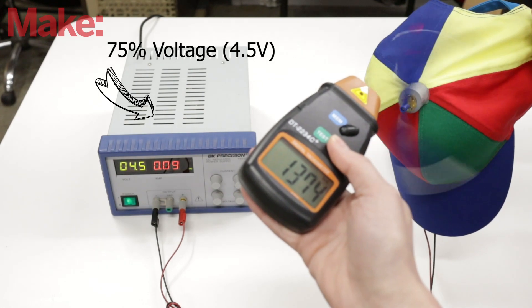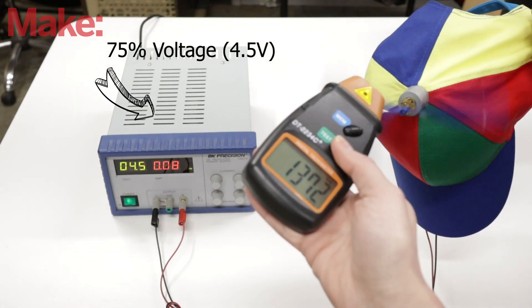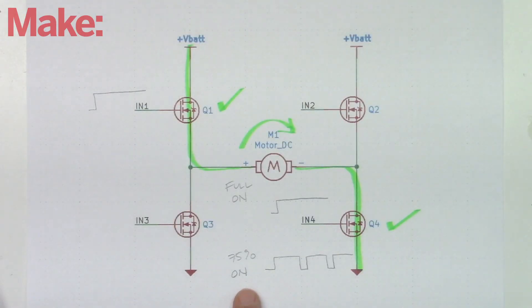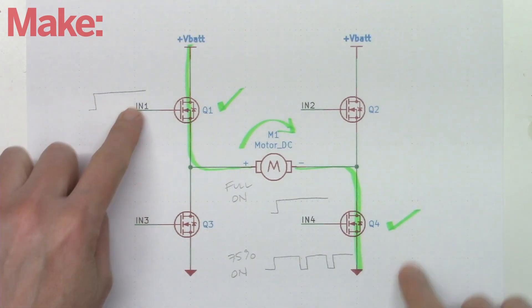So by varying the duty cycle of the PWM, we can slow down and speed up our motor. In conclusion, an H-bridge controls motor speed with a PWM and direction by changing which transistor pair is on.